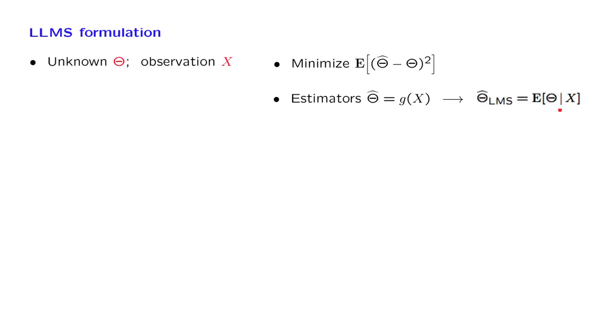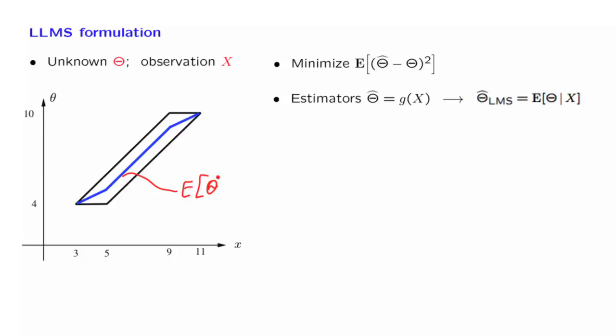Now let us look at an example that we considered earlier. Suppose that X and Θ have a joint PDF which is uniform over this particular region. We did consider this example, and we found that the optimal estimator was a function that had this particular shape. So this blue curve here corresponds to the function, which is the conditional expectation of Θ given the value of the observation that we have obtained.